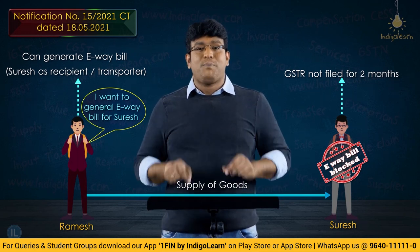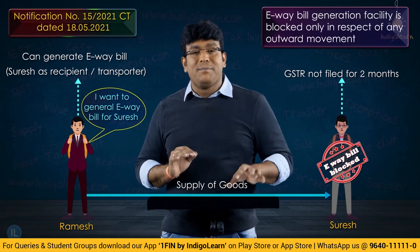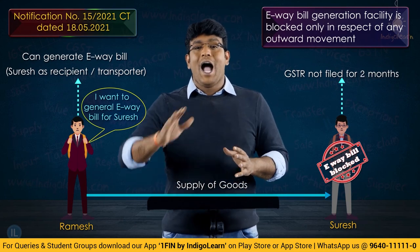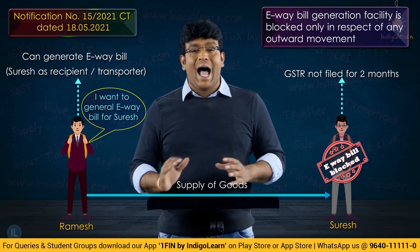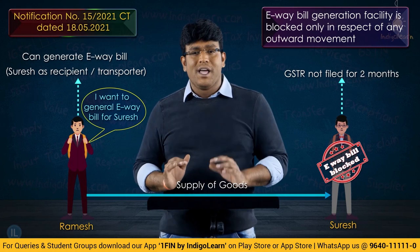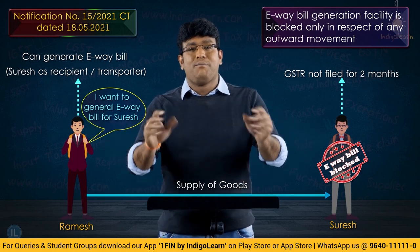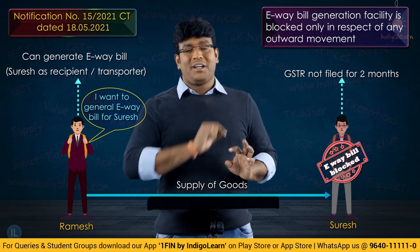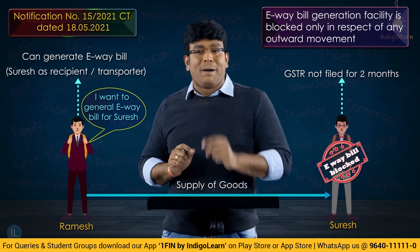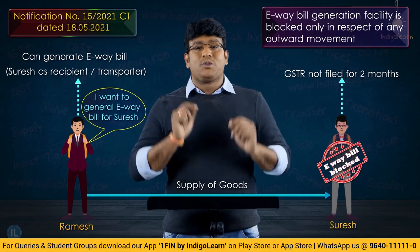What is blocked is generation of e-way bill as a consignor for outward movement. In case of failure to furnish return for the last two months, the facility to generate e-way bill for outward movement is completely blocked, but inward movement is still allowed. This is a fantastic amendment brought by Notification No. 15/2021 dated 18th May 2021.